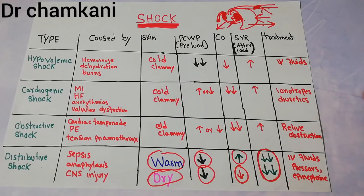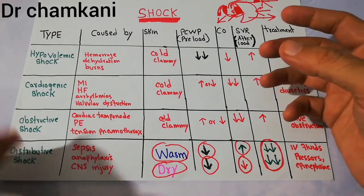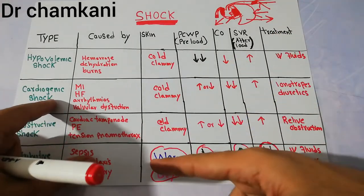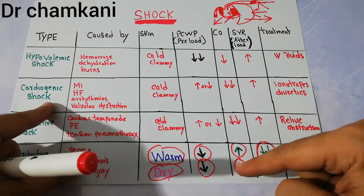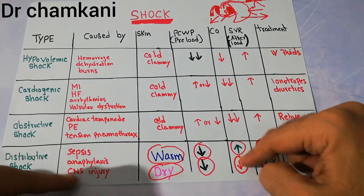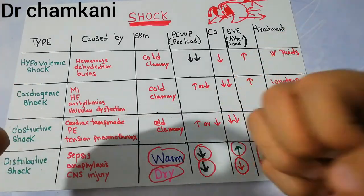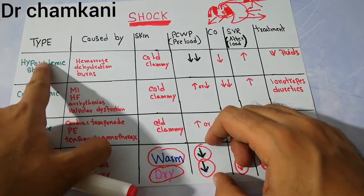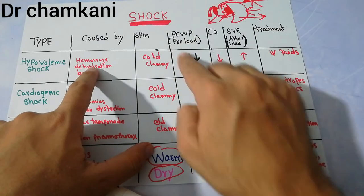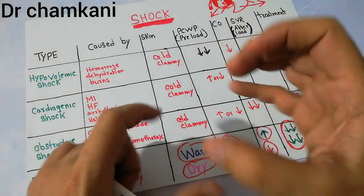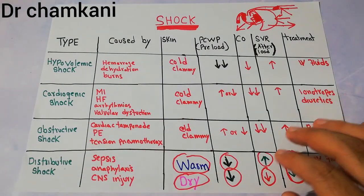Depending upon the cause, IV fluids or epinephrine can be given to correct the cause. This is the distributive type of shock, which must be differentiated from others. In distributive shock, skin can be warm or dry — warm in sepsis, dry in CNS injury. Systemic vascular resistance will be low, and cardiac output will be high in sepsis and anaphylaxis but low in CNS injury. The preload will always be low. In hypovolemia, preload is decreased due to actual fluid loss. In distributive shock such as sepsis, vasodilation causes pooling of blood so blood cannot return to the heart, also decreasing PCWP and preload — but the cause in both cases is different.